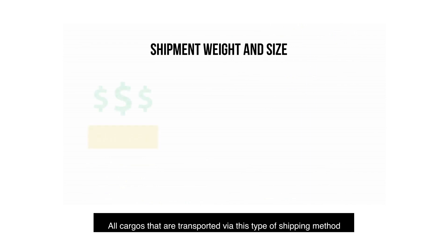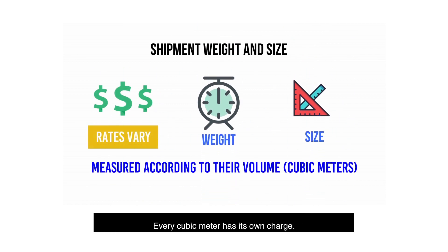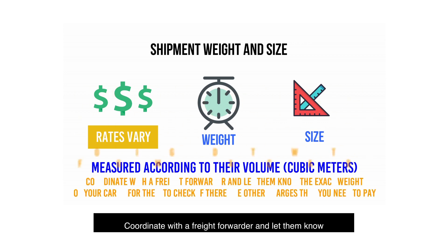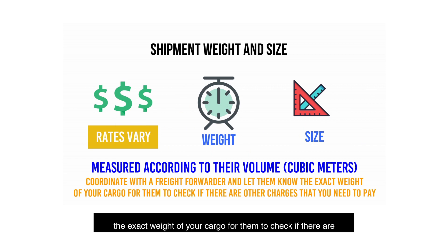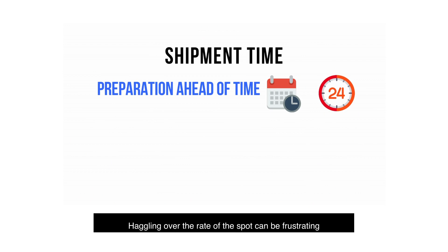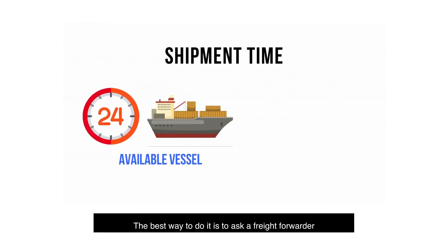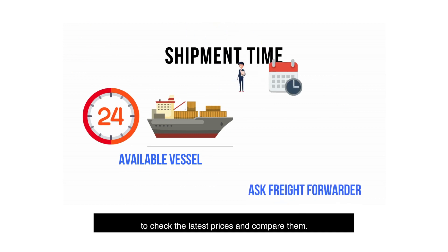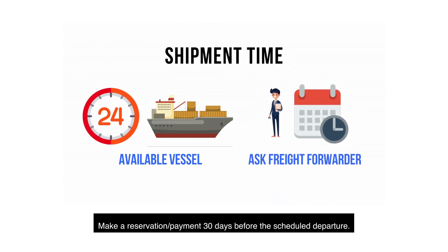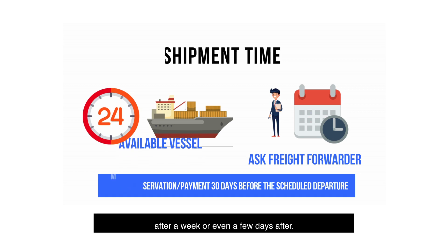Shipment weight and size: all cargoes transported via this method are measured according to their volume in cubic meters. Every cubic meter has its own charge. Coordinate with a freight forwarder and let them know the exact weight of your cargo for them to check if there are other charges that you need to pay. Shipment time: this factor needs preparation ahead of time. Haggling over the rate on the spot can be frustrating since this changes quickly depending on the space available in the vessel. The best way is to ask a freight forwarder to check the latest prices and compare them. Make a reservation or payment 30 days before the scheduled departure. Normally, freight prices do not change for about a month, but there may be times where they change after a week or even a few days.